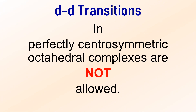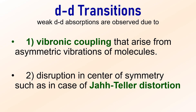In theory, transitions between two d-orbitals in perfectly centrosymmetric octahedral complexes are not allowed according to the Laporte rule. However, weak d-d absorptions are still observed, primarily due to vibronic coupling, which arises from asymmetric vibrations in the molecule. Additionally, a disruption of the centre of symmetry, such as in the case of Jahn-Teller distortion, can also make these transitions weakly allowed.